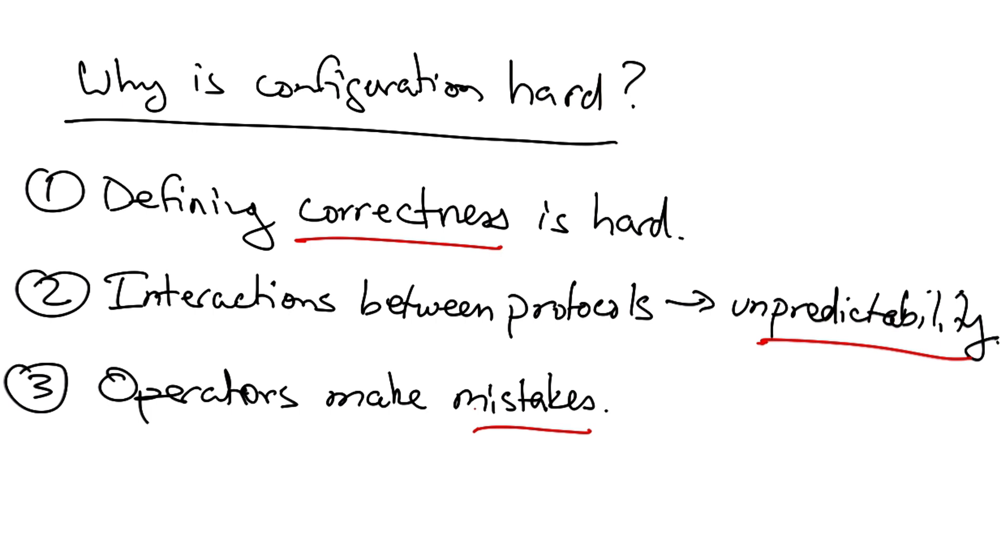The third reason that configuration is hard is that operators simply make mistakes. Configuration is difficult, and network policies are very complex.